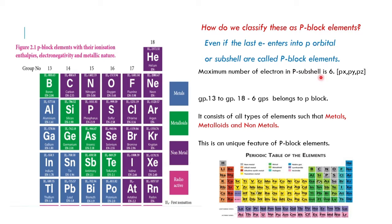The maximum number of electrons in the P subshell will be 6: Px has 2 electrons, Py has 2 electrons, and Pz has 2 electrons — total 6 electrons maximum in the P subshell. Groups 13 to 18 belong to P block elements.